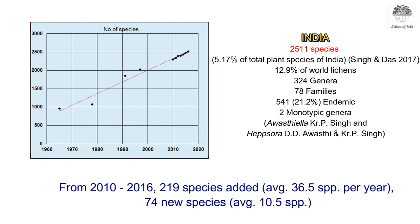From 2010 to 2016, we have added 219 species at an average of 36.5 species per year. Every year we are discovering new species; from 2010 onwards we have discovered 74 new species, which averages up to 10.5 species per year.